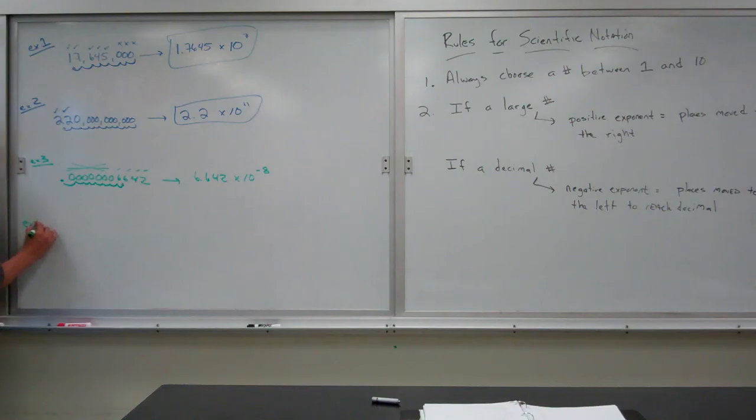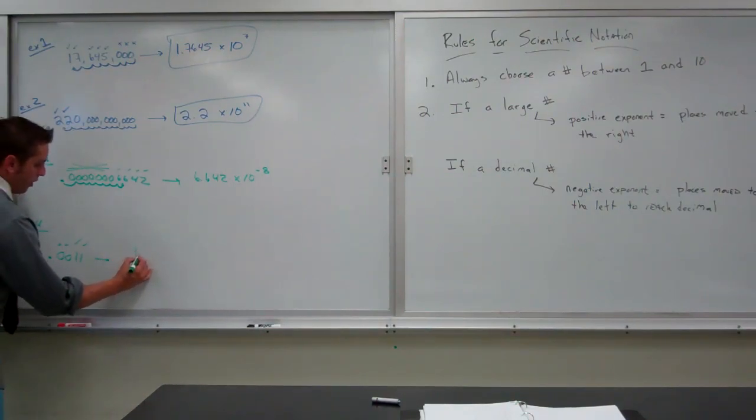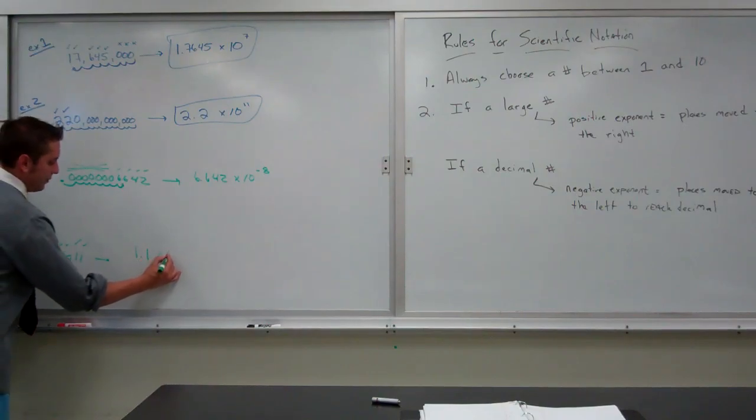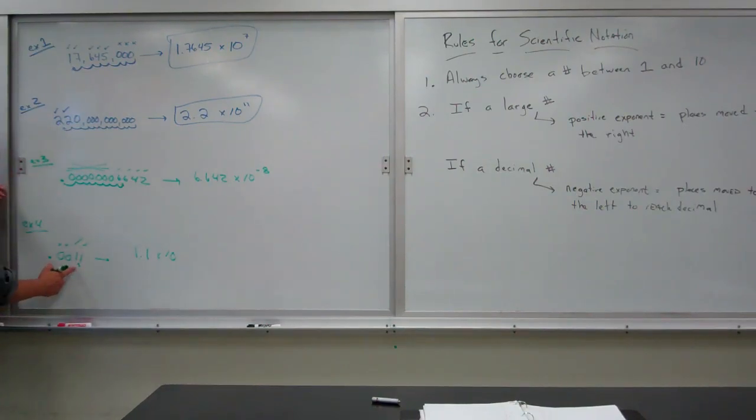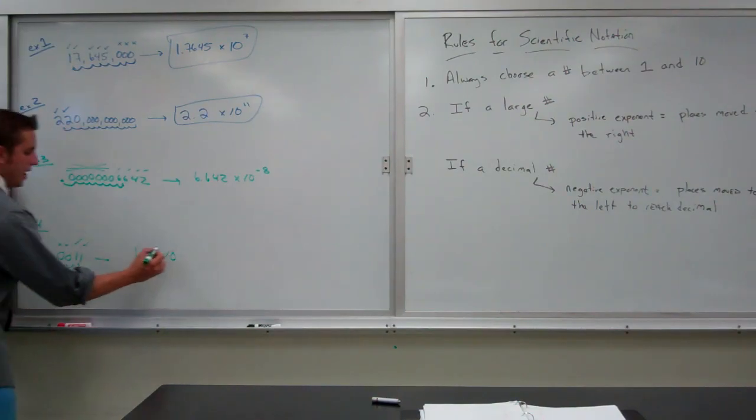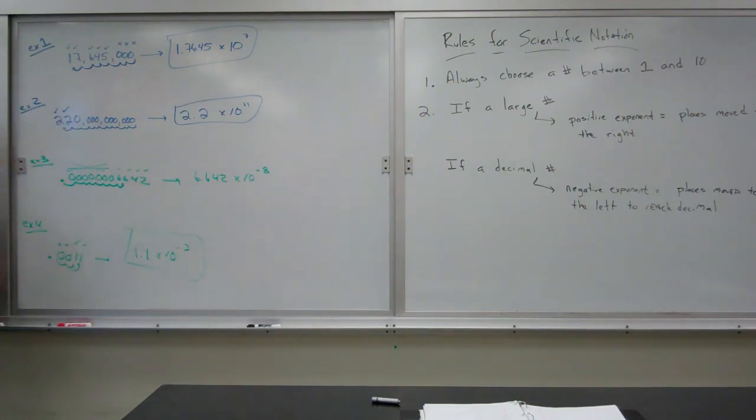Last but not least, if we looked at a number like .0011, it doesn't have to be a large number. And to be honest, I doubt I would change that into scientific notation. But, if I wanted to, I get two sig figs because those first two zeros do not count. So, my number would be 1.1 times 10 to the, here's my decimal that I put in, 1, 2, 3 places to get back, times 10 to the negative third.